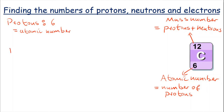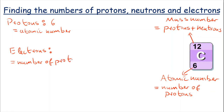Now we need to find the number of electrons. To find this number, we need to remember that in a neutral atom, the number of protons equals the number of electrons. We already have the number of protons — it's 6 — so that means there are also 6 electrons.